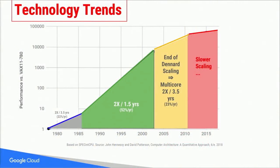Brad stole my thunder earlier. This is a beautiful chart from a textbook by Patterson and Hennessy, 'Computer Architecture: A Quantitative Approach.' What's nice about this chart is that it shows the key phases of technology trends. The green era was the era of Dennard scaling — transistor shrinking, but power density remaining the same — and you saw performance improvements of 52% year over year. Amazing. But that ended about 15 years ago.